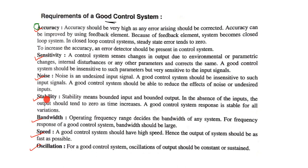Now we discuss stability. Stability means bounded input and bounded output. In the absence of the input, the output should tend to zero as time increases — if you do not apply an input then there should be no output of the system. A good control system response is stable for all variations. If the output of the system is very accurate then the stability of the control system is very high.